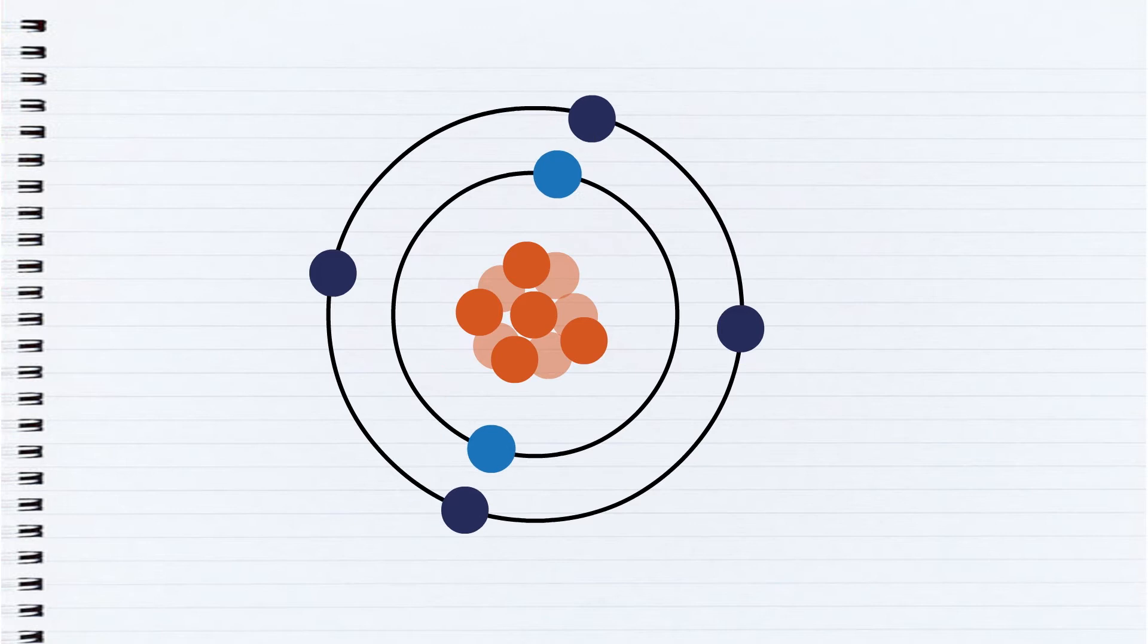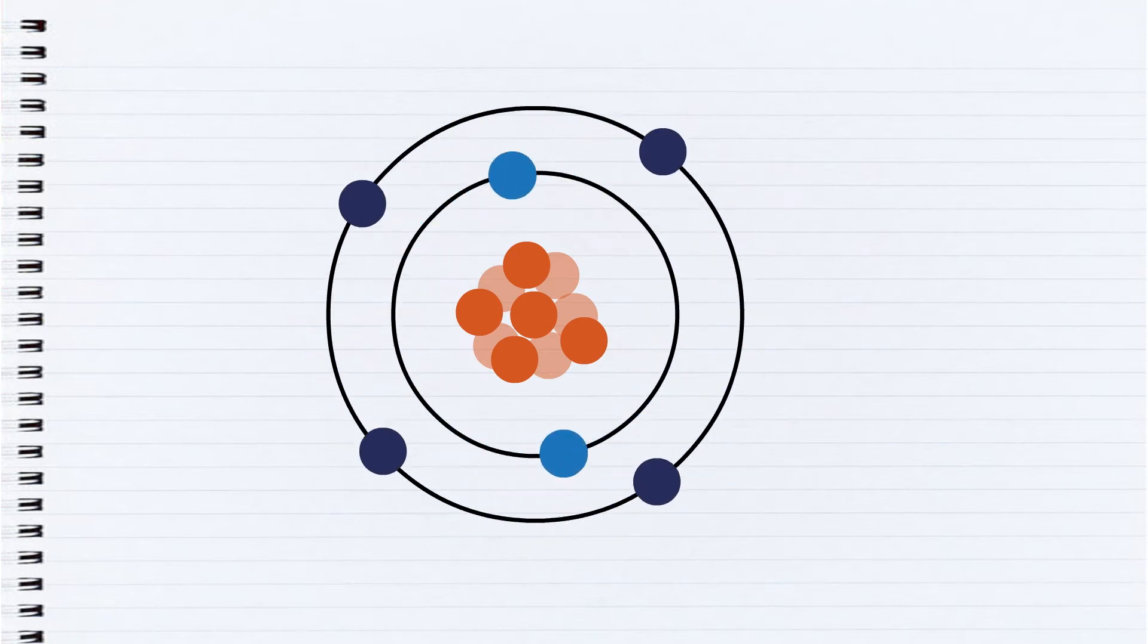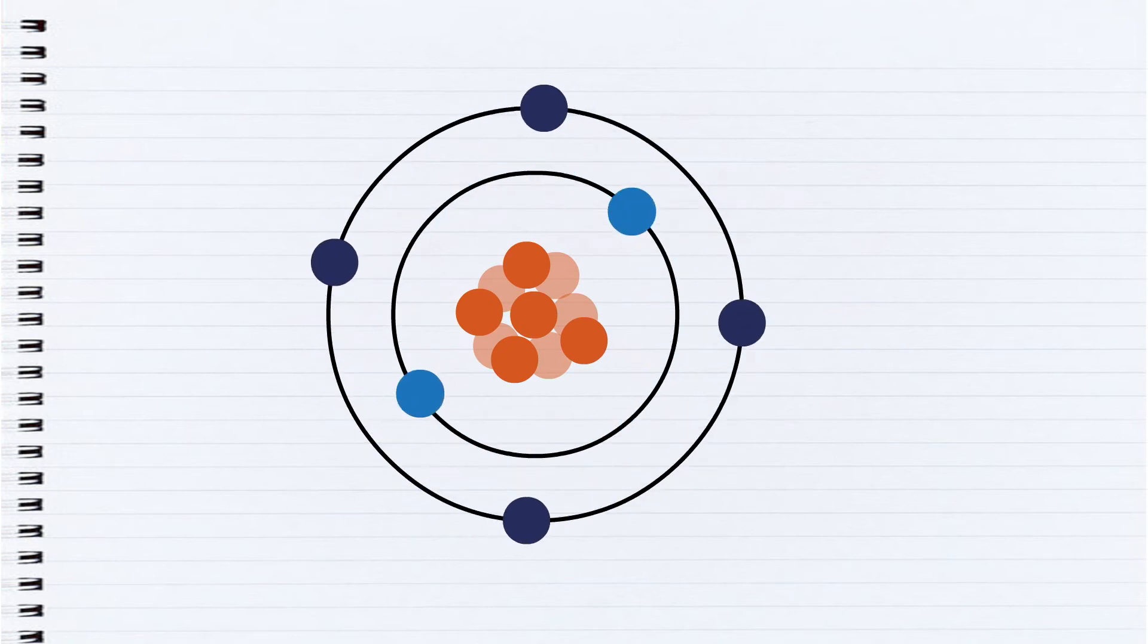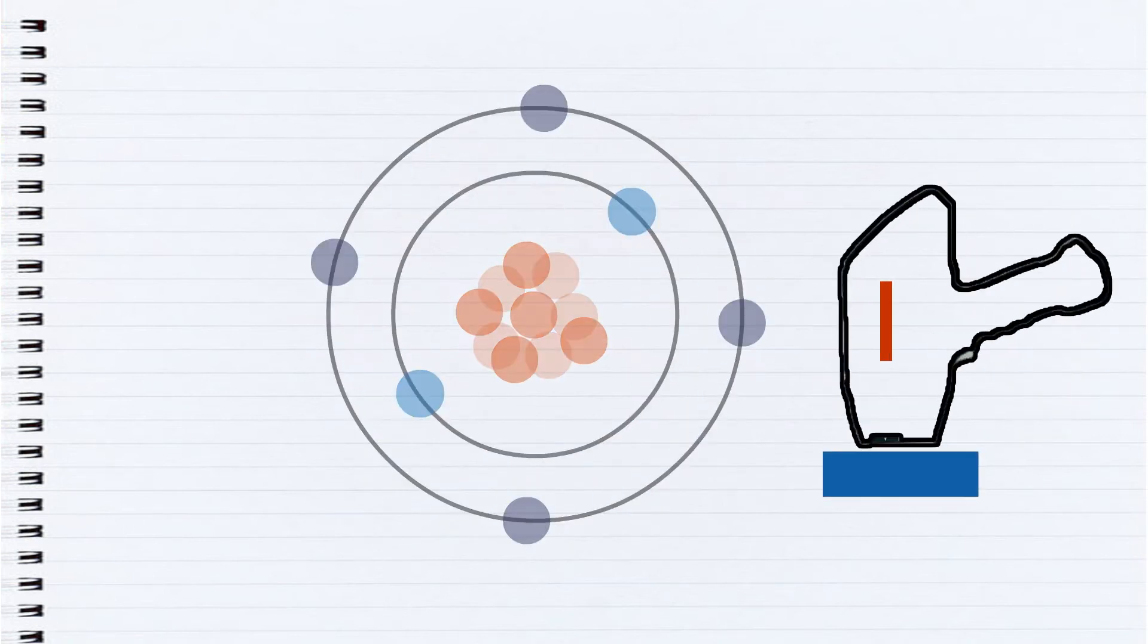So what happens to atoms ionized by X-rays? Let's take a look. A stable atom is made up of a nucleus of protons and neutrons with electrons that range in different energy levels or shells orbiting the nucleus. Different shells can hold different numbers of electrons. A stable atom will have all these inner electron shells full.